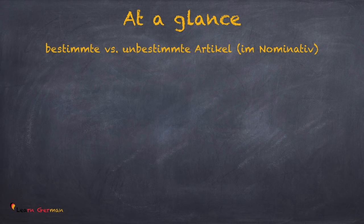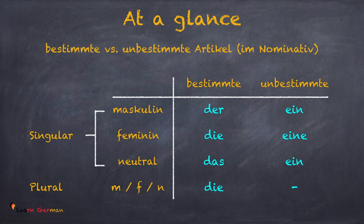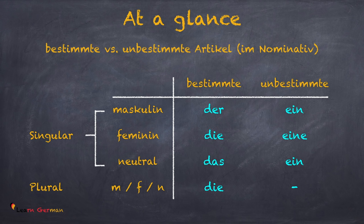Now let's summarize bestimmte und unbestimmte Artikel im Nominativ. For masculine, the bestimmte article is 'der' and the unbestimmte article is 'ein'. For feminine, the bestimmte article is 'die' and the unbestimmte article is 'eine'. For neutral, the bestimmte article is 'das' and the unbestimmte article is the same as for masculine, that is 'ein'. For plural, irrespective of the gender, the bestimmte article is 'die' and there is no unbestimmte article. Remember, these articles are for the nominative case; further cases will be discussed in later chapters.